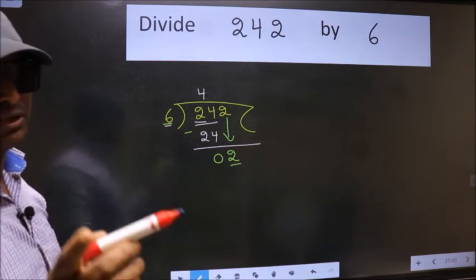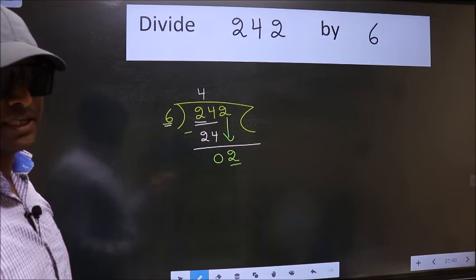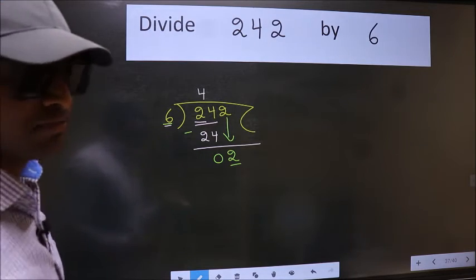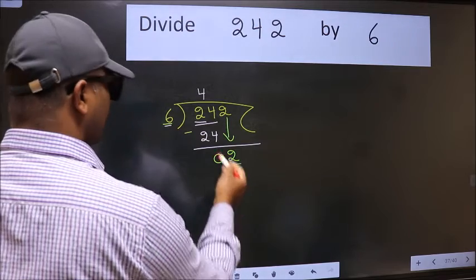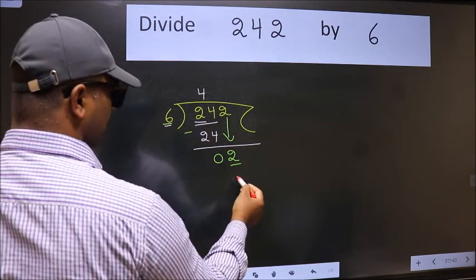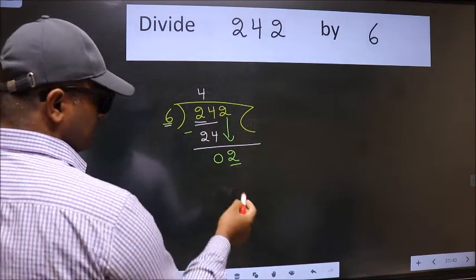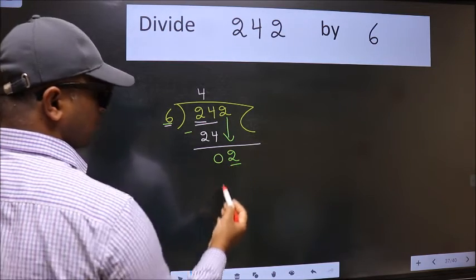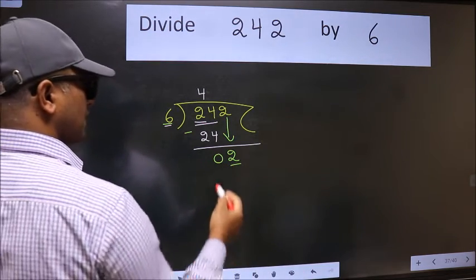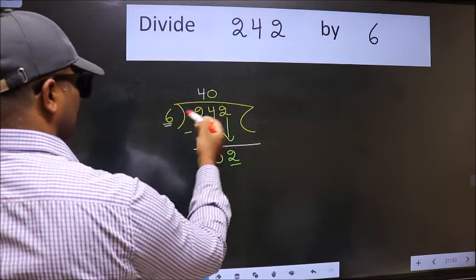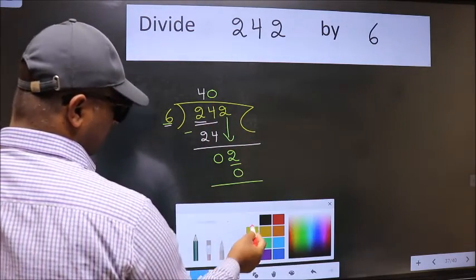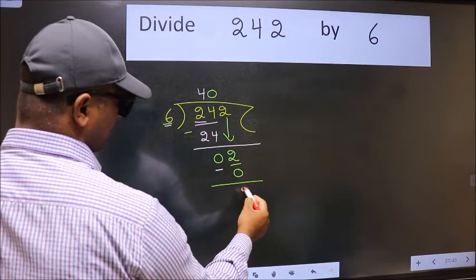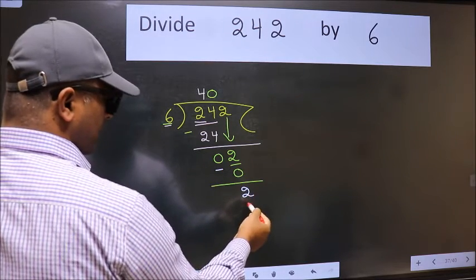Instead of that, what you should think of doing is: which number should we take here? If I take 1, we will get 6, but 6 is larger than 2. So what we do is we take 0. 6 into 0 is 0. Now we subtract—we get 2.